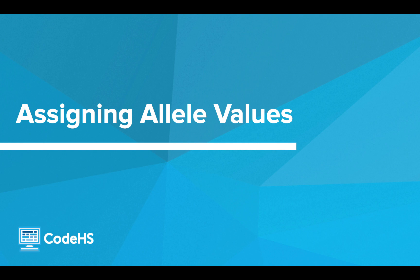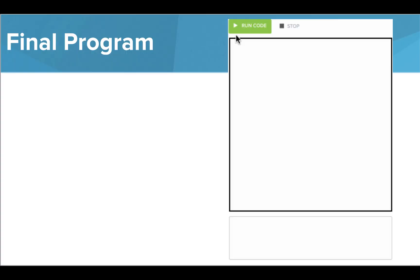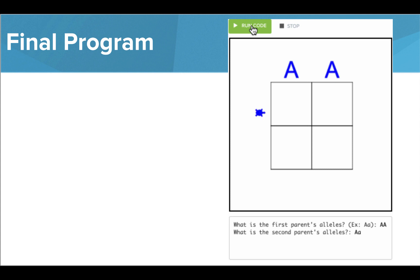Hi! Now that we've figured out how to place our allele values on our canvas, let's find out how to get these values from the user. As you can see, in our final program, we want the user to enter the allele values that are printed onto the screen.